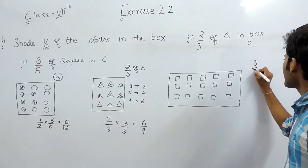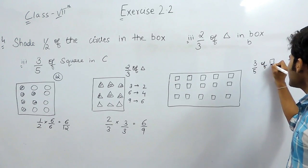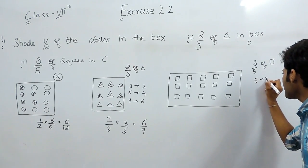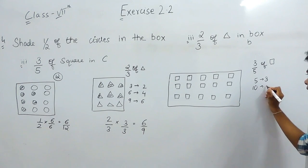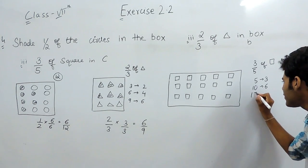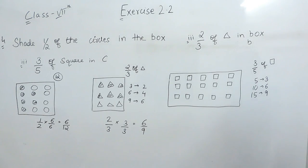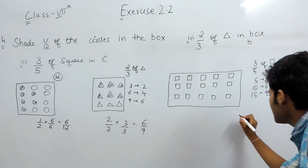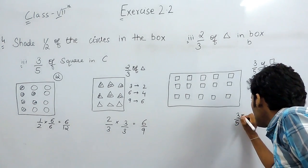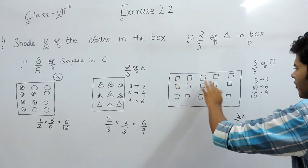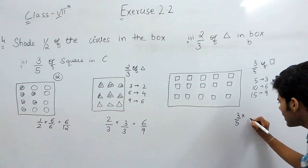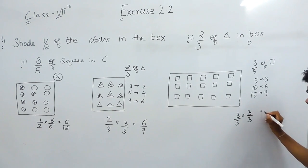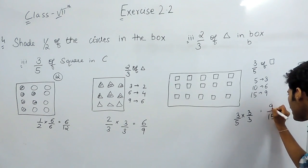Similarly for part C, we have 3 upon 5 of total squares. This means that if there were 5 squares we shade any 3; if there are 10 squares we shade any 6; and if there are 15 squares we shade any 9. There are 15 squares so we write 3 upon 5. Multiplying and dividing by 3, the denominator becomes 15 and the numerator becomes 9.